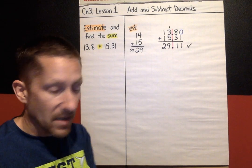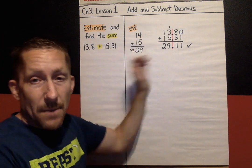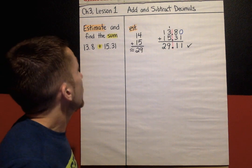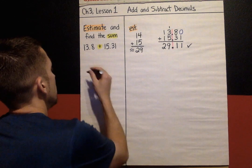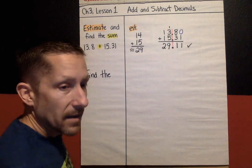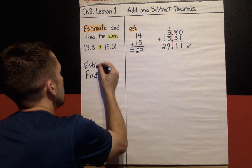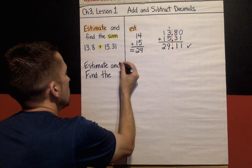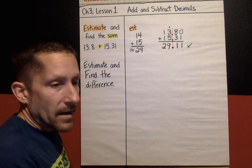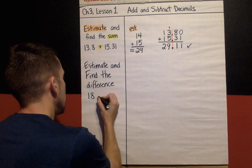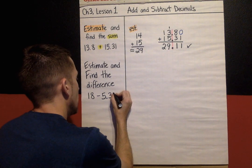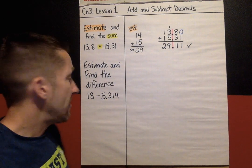The next problem we're going to look at. By the way, on some of the problems today in your workbook, we're going to add doing an estimate as well as finding the exact sum. Next problem is, let's say we're going to estimate and find the difference. And this time we're going to do the difference of 18 subtract 5.314.